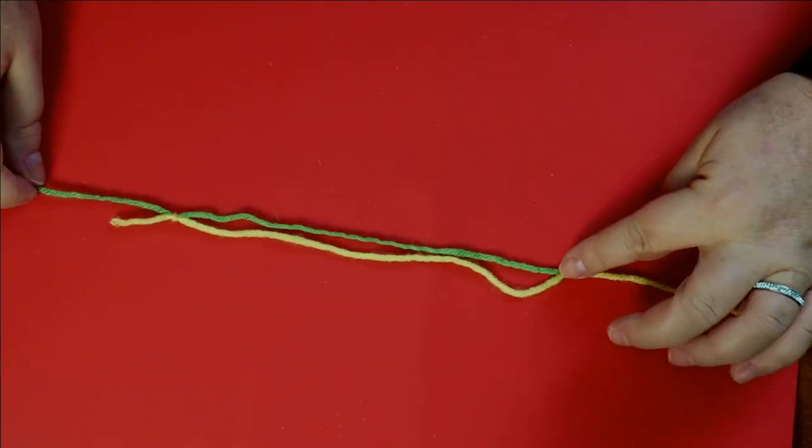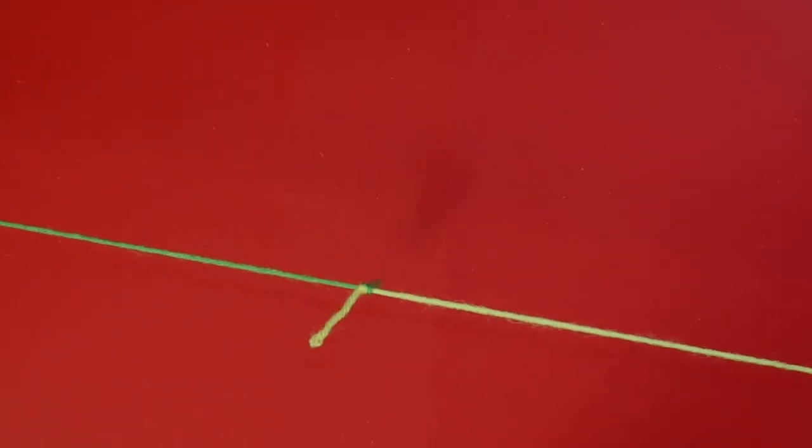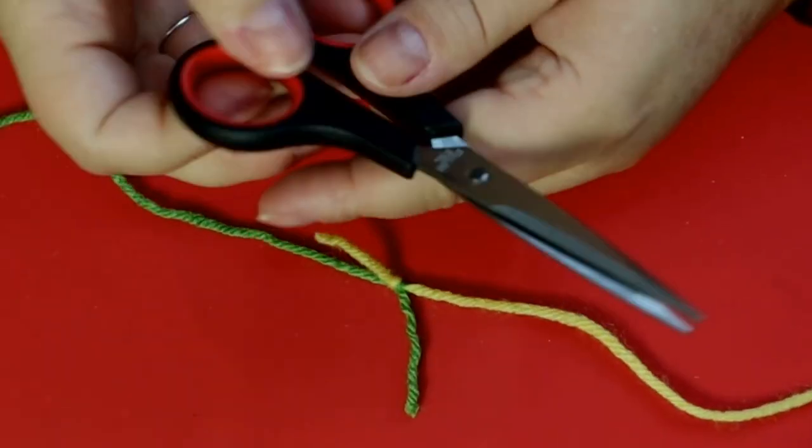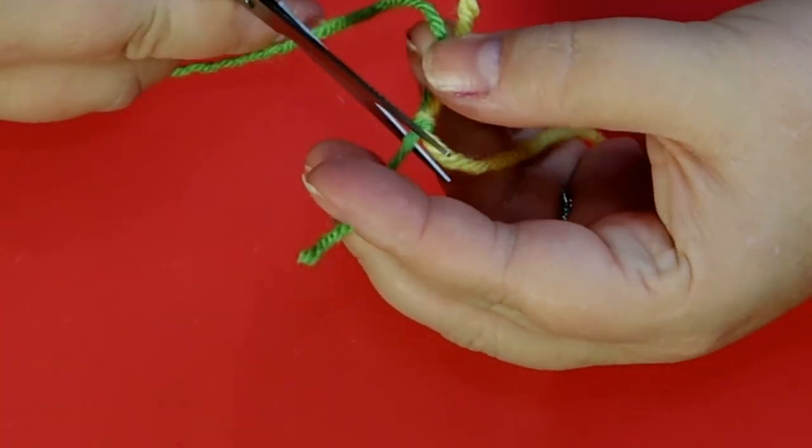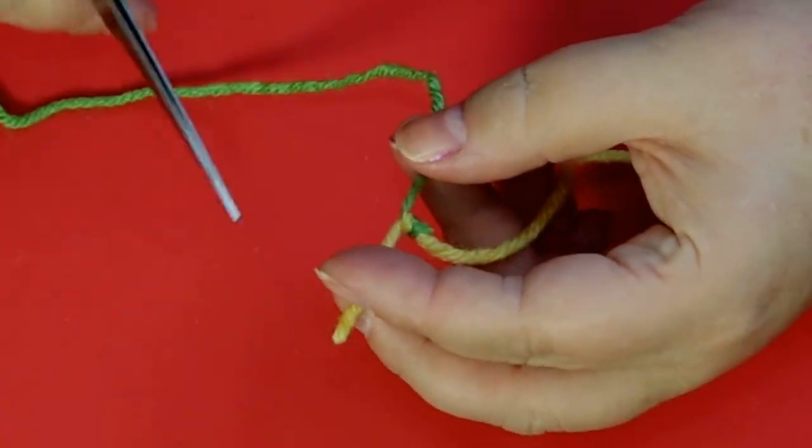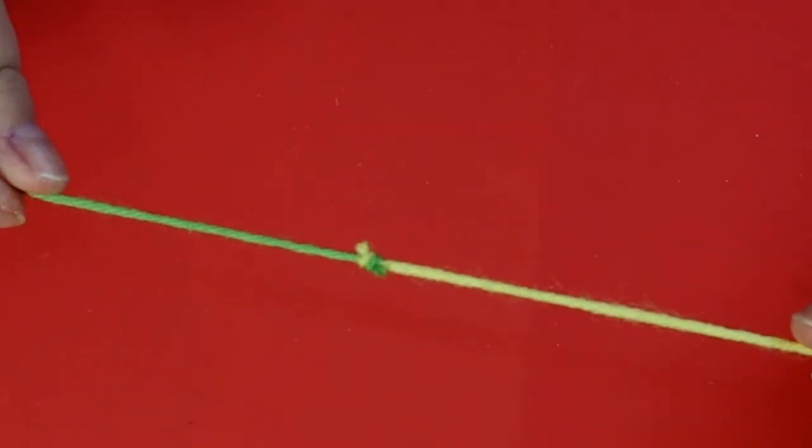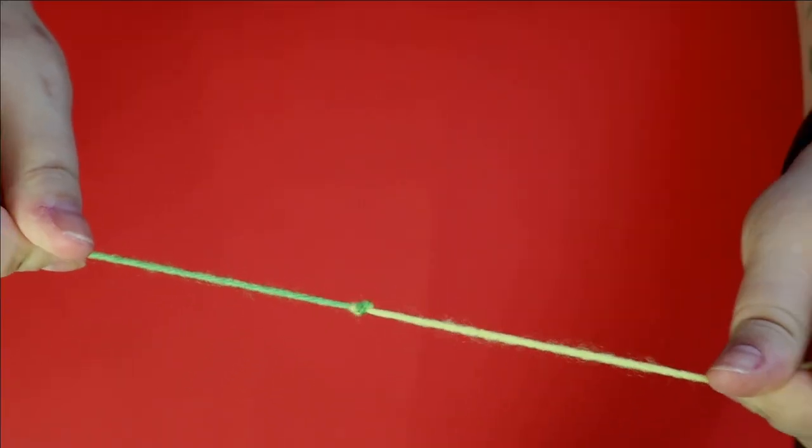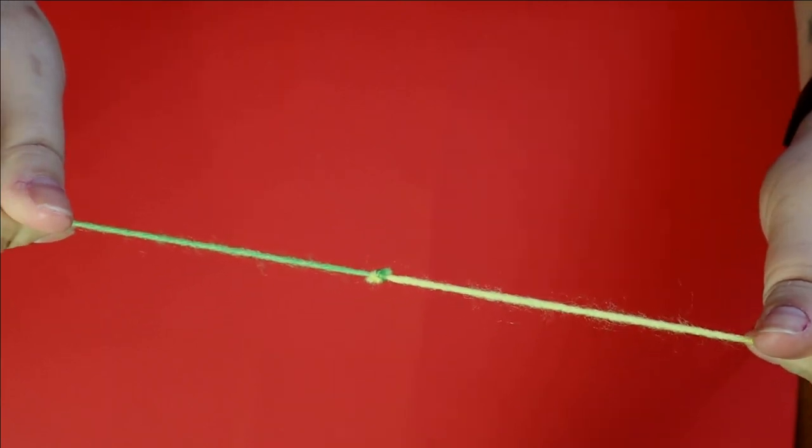So once you've got them tied together like this, you just simply pull till they come together. And now you can cut off each of these pieces as close as you want, just like that, as close as you want and they will never come undone. That's your magic knot.